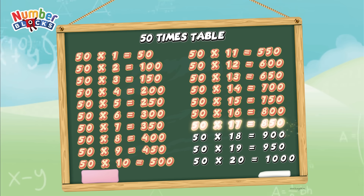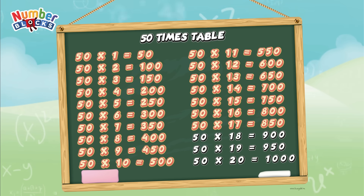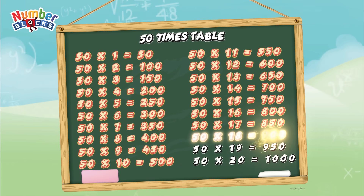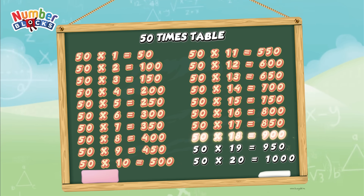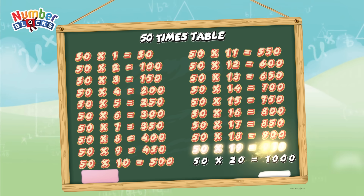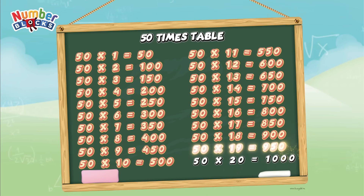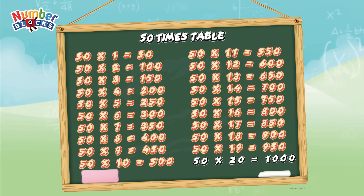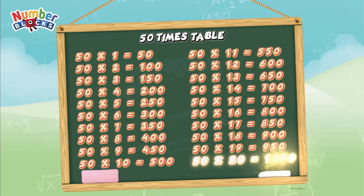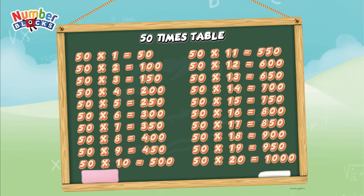50 multiplied by 17 is equals to 850. 50 multiplied by 18 is equals to 900. 50 multiplied by 19 is equals to 950. 50 multiplied by 20 is equals to 1000.